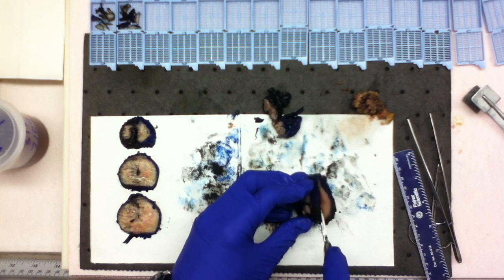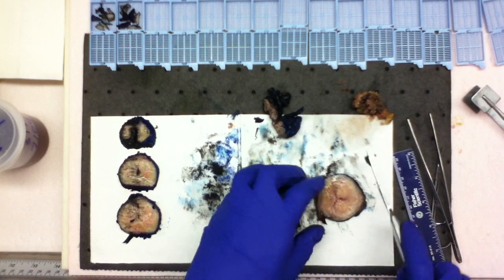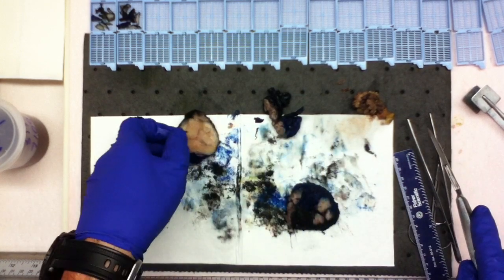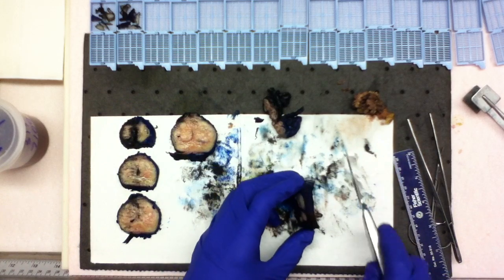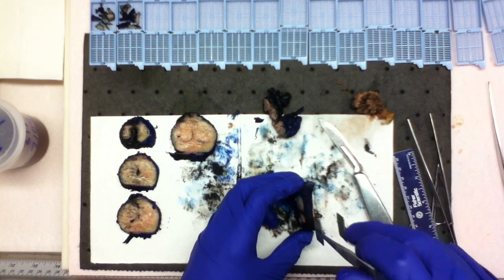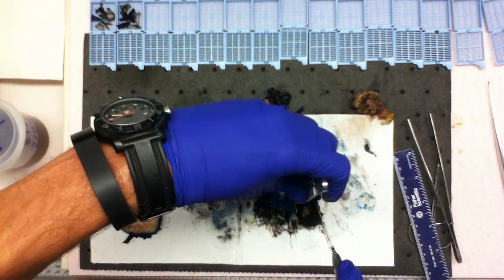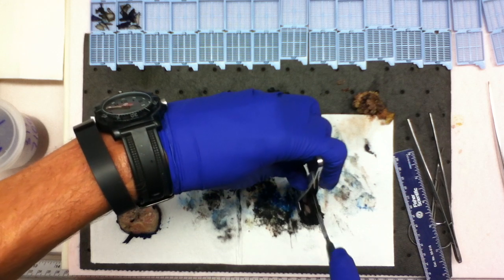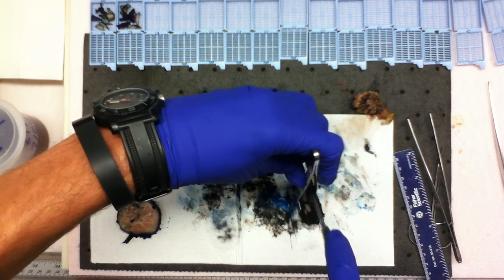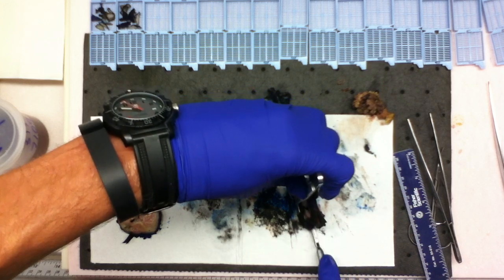So as you get down toward the smaller end, just use your paddle forceps and it helps hold the prostate in place so you don't cut your fingers. The difficult part of these is keeping consistent thickness throughout the entire cut.